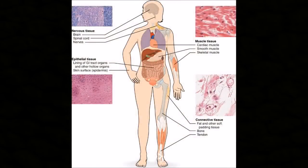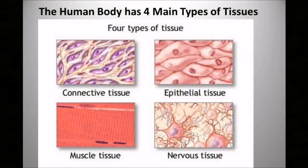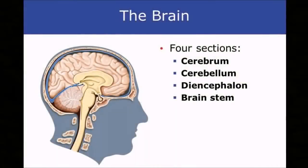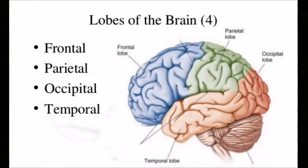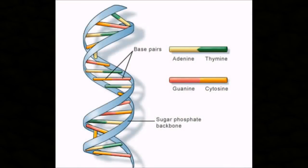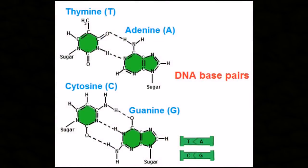Even human bodily tissue is divided into four types: epithelial tissue, connective tissue, muscle, and nervous tissue. Our brains — also divided into four main sections: the frontal lobe, the parietal lobe, the occipital lobe, and the temporal lobe. Did you know that all DNA is made up of four base elements? Adenine, guanine, cytosine, and thymine.